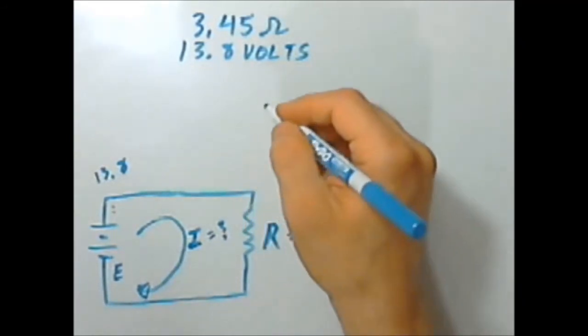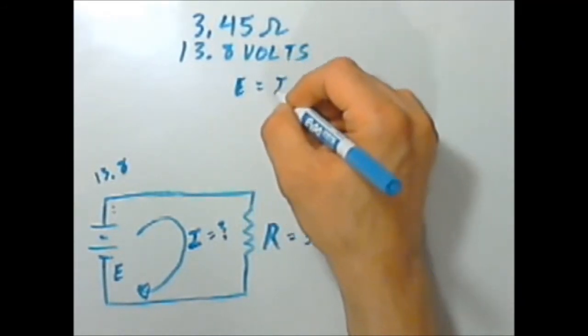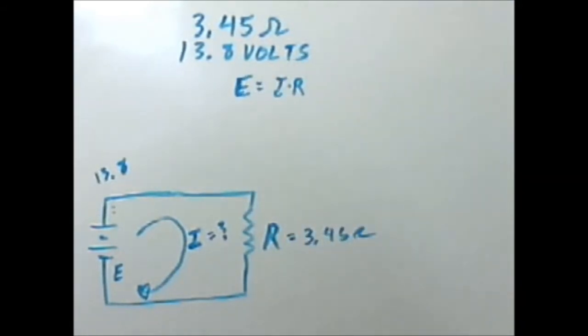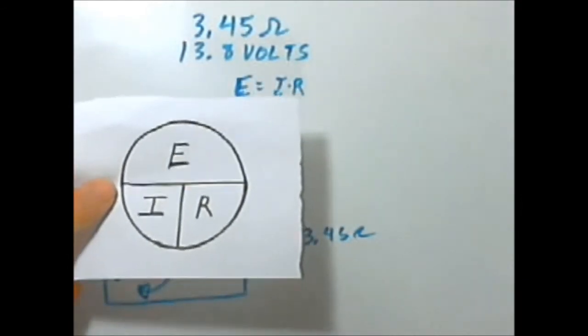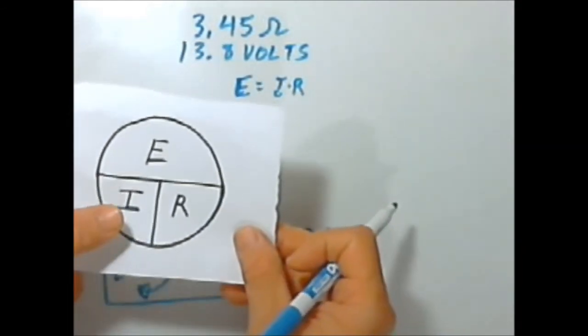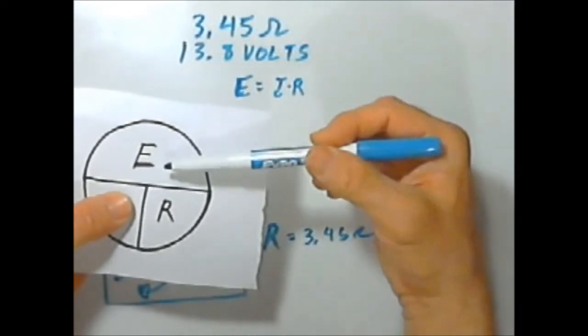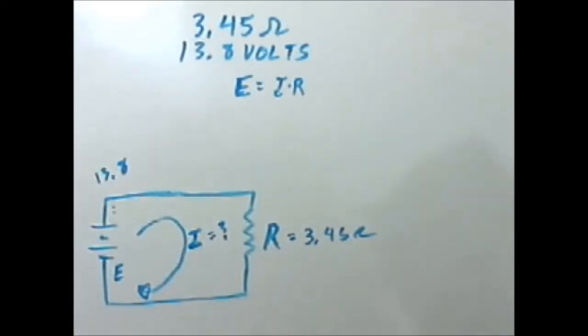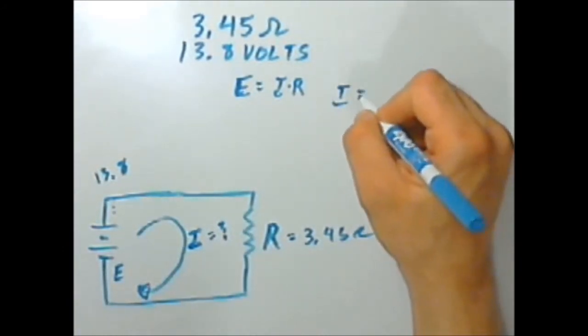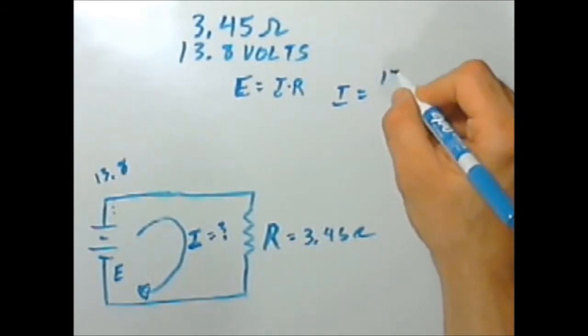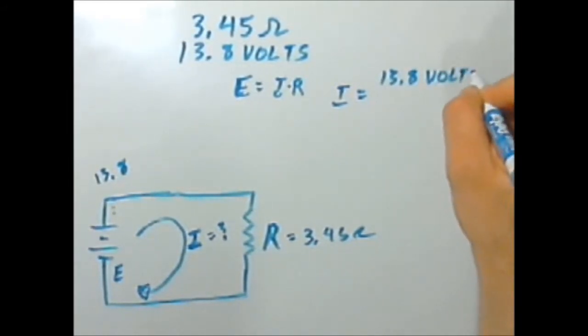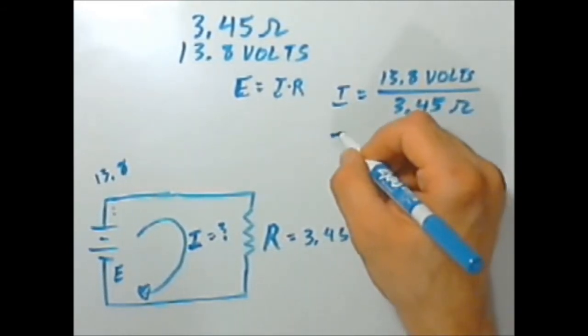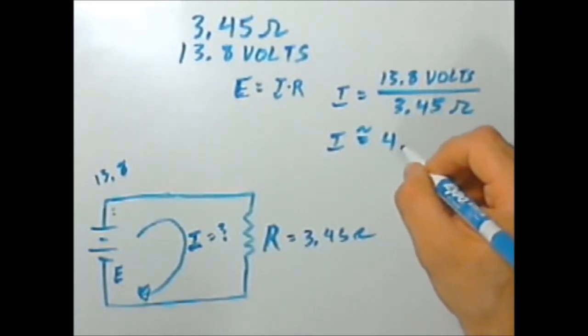Well, let's figure it out. E equals I times R. Again, if we use our handy dandy Ohm's Pi, we want to solve for the current that's drawing. So that leaves us with E divided by R. So let's figure that out. I equals 13.8 volts divided by 3.45 ohms. And that gives you an I of roughly four amps.